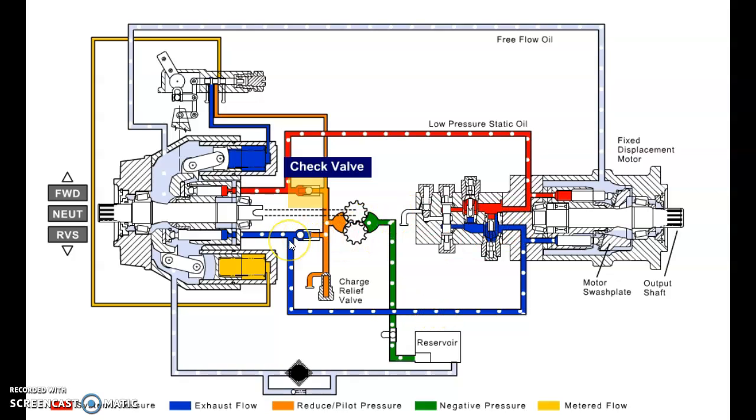The reason we need to replenish the loop and put oil in on the low pressure side is because we've got case drain at both the motor and the pump. We have case flow coming out of the motor traveling into the case of the pump, and then out the case drain line from the pump through potentially a cooler, and then back to the reservoir. That's what the charge pump is going to put back into the system.